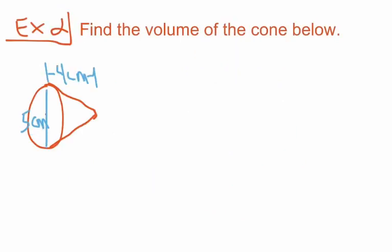For our second example, we have a cone that is laying on its side. The base of the cone has a diameter of 5 centimeters and the height of the cone is 4 centimeters. Since the diameter is 5 centimeters, the radius is 2.5 centimeters.